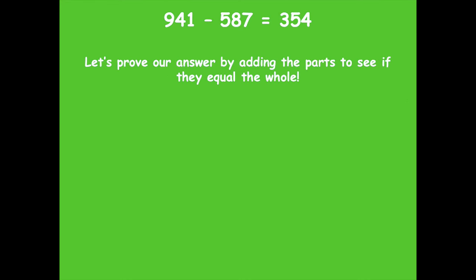Remember, we can prove our answer by adding the parts to see if they equal the whole. So let's do it. We're going to line up 587 plus 354. If I subtracted correctly, my total should be 941. Start in the ones place. Seven plus four is 11. So that's one ten, one one.